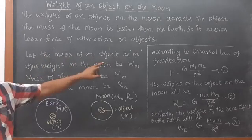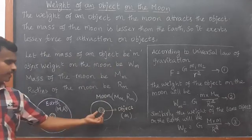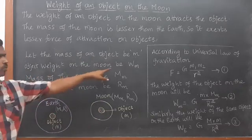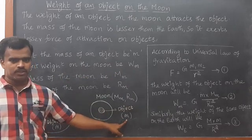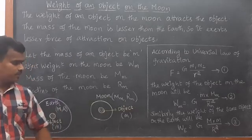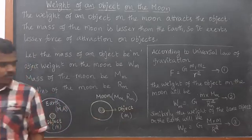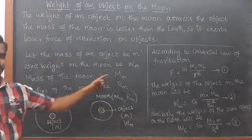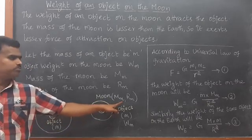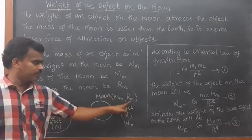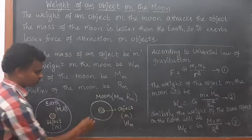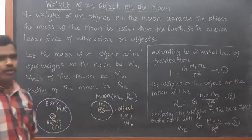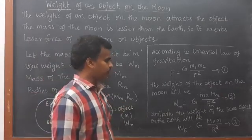Now, with the mass of an object being small m, here I draw: this one is the moon, this one is the earth, and here we have the object. So the object on the moon — the weight of the object on the moon is W suffix M. For this object, mass is m and the weight of this object is W_M. The mass of the moon is M suffix M — small M for moon — and the radius of the moon is R suffix M, where R stands for radius and M stands for moon.